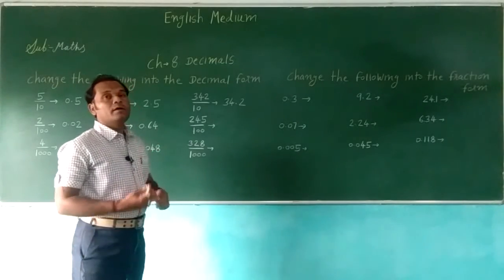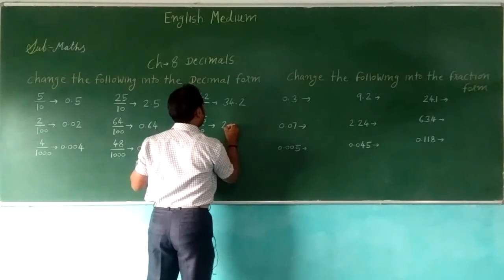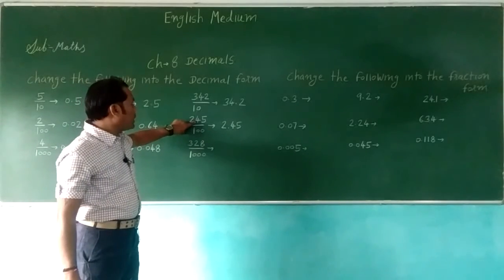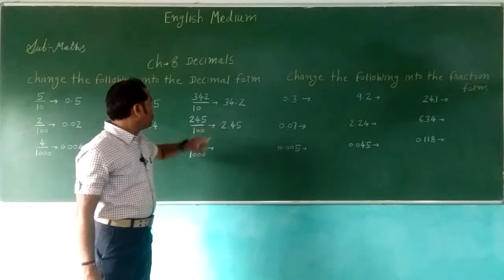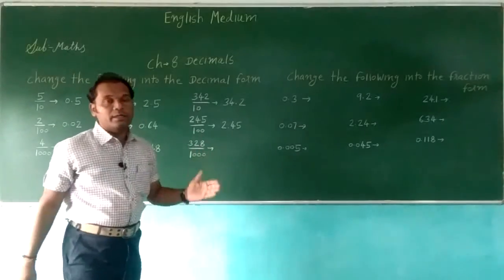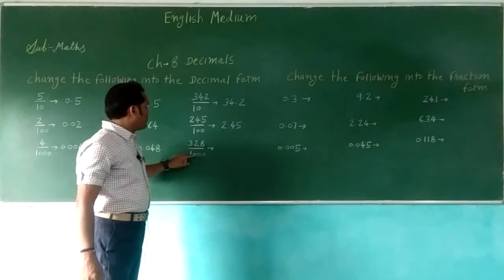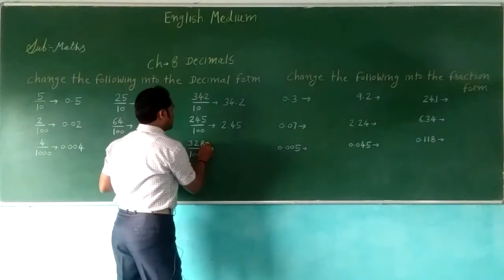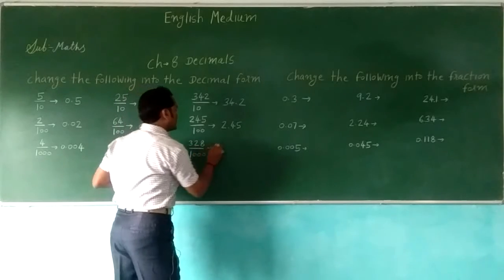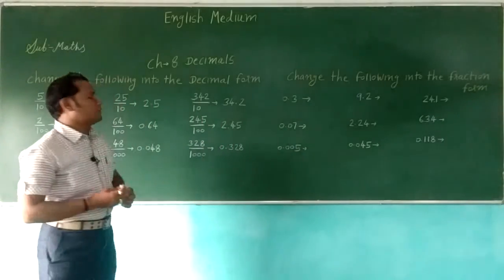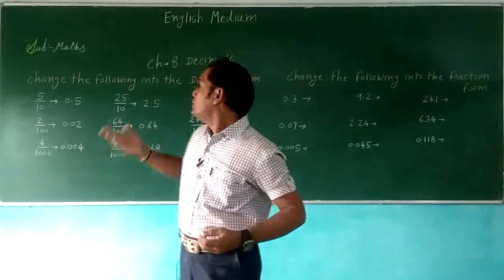328 by 1000: decimal point is going 3 steps — 1, 2, and 3 steps — so the answer is 0.328.